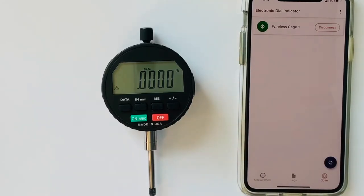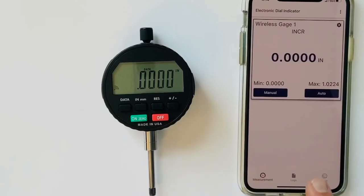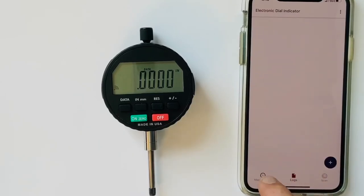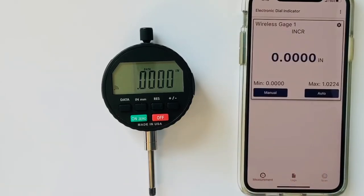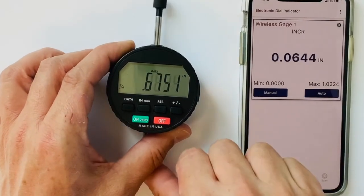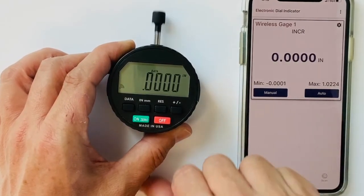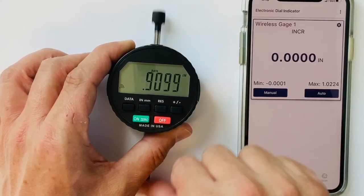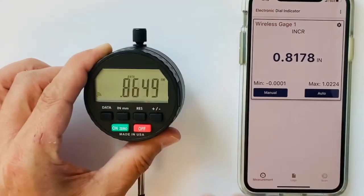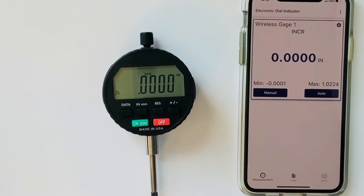There are three major menus on this app. We're in the scan. There's the measurement and then there's logs. Measurement is the main screen. Here you can see your readings. See how responsive it is. It's a really smooth indicator, real nice indicator. Updating on the display.